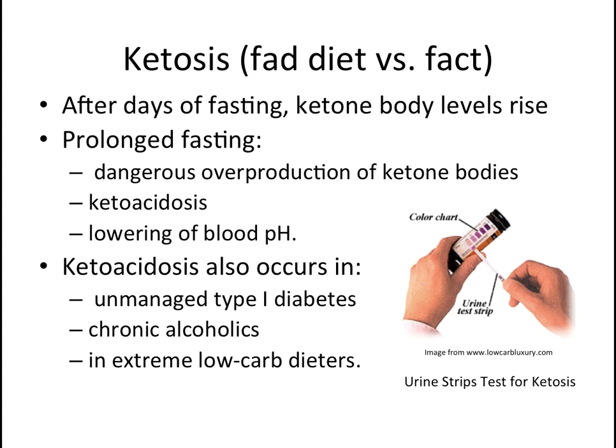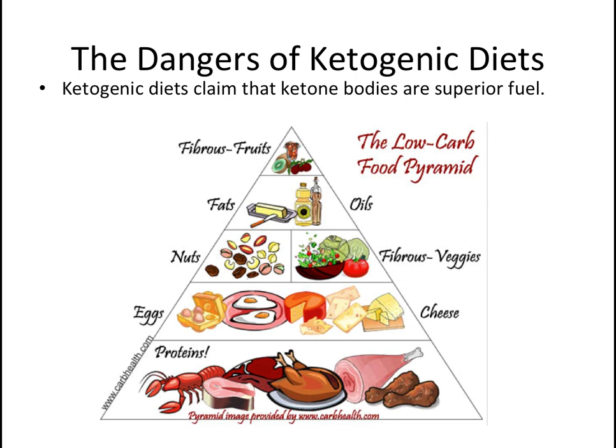Ketoacidosis can occur in a variety of conditions, including people with unmanaged type 1 diabetes, chronic alcoholics, and low-carb dieters. Some low-carb gurus advise dieters to buy urine strips that detect ketone bodies to ensure that carbohydrate intake is low enough to induce ketosis. Low-carb advocates maintain that ketones are a superior fuel and that since ketosis is a natural state, there is nothing dangerous about maintaining such a diet. However, scientific evidence runs contrary to this idea, and responsible health professionals warn patients of the dangers of such a diet.